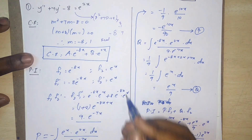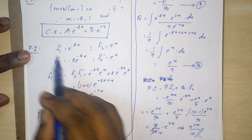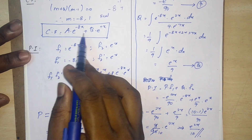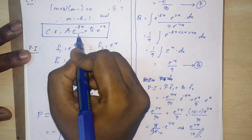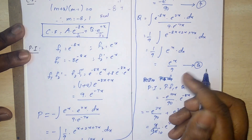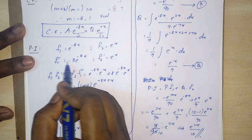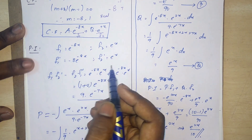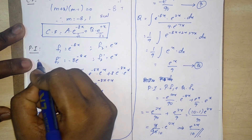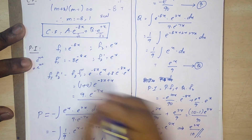Since the roots are real, the complementary function is CF = a·e^(-8x) + b·e^x. Now for the particular integral, f1 = e^(-8x) and f2 = e^x. Differentiating: f1' = -8·e^(-8x) and f2' = e^x.